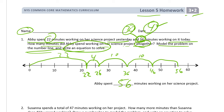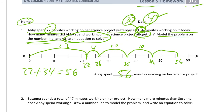56 minutes. Now notice this is not really a timeline with a time of day — it's not labeled 2 o'clock or 3 o'clock. We're just counting up minutes on a number line. And we have to write an equation: 22 plus 34 equals 56. Now we've done everything we need to do.